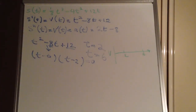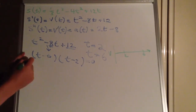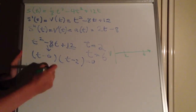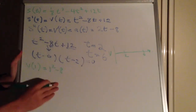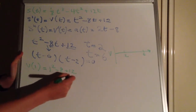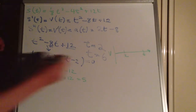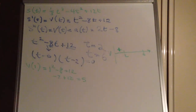To fill in the gaps, we substitute values into the velocity function. Let's find v(1) — something less than 2. V of 1 equals 1 squared take 8 lots of 1 plus 12. That's 1 take 8 which is negative 7, plus 12, equal to positive 5. So we have a positive result there, meaning the displacement is increasing before it gets to t equals 2.